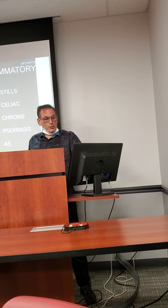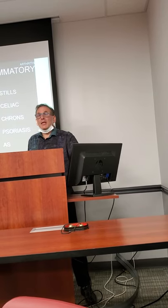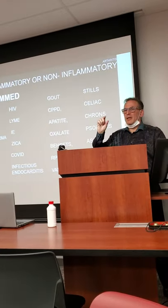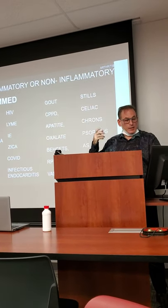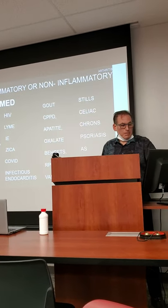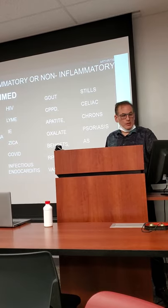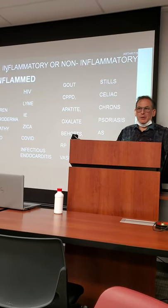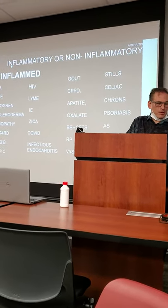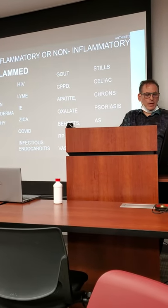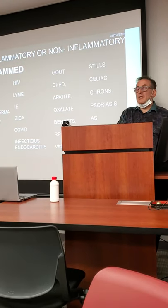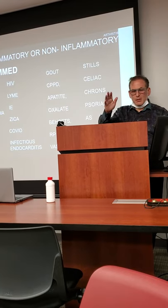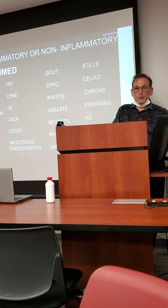Crystal types: calcium pyrophosphate (CPPD), hydroxyapatite — which is what you see in calcification on the rotator cuff — and oxalate, which you see in dialysis patients rarely. Adult-onset Still's disease is another big one for inflammatory joint fluid.